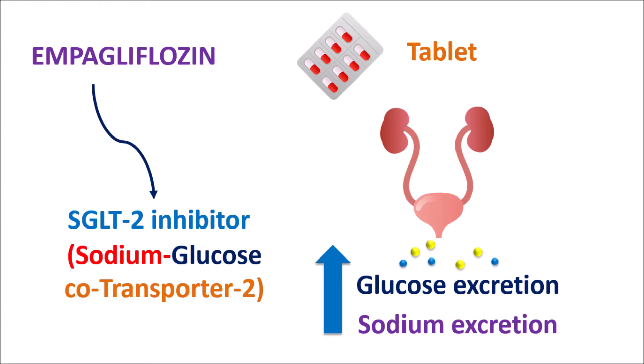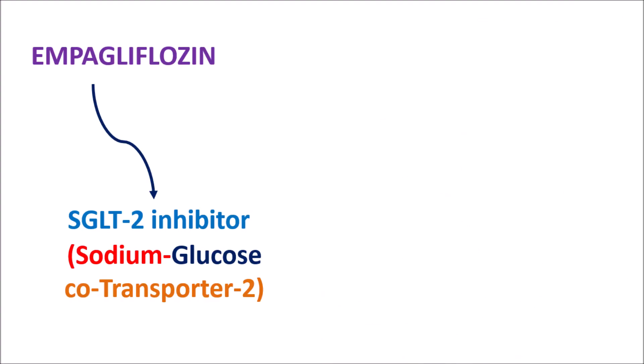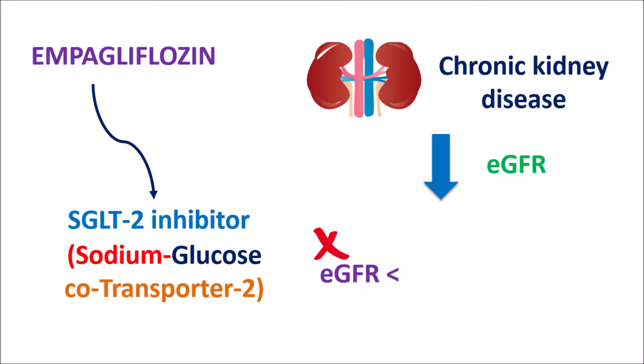This drug can also be used in other conditions like chronic kidney disease (CKD), a condition where the glomerular filtration rate is reduced. In such people we observe a reduced value of eGFR — estimated glomerular filtration rate. Empagliflozin can be given in such people to increase diuresis, but in cases of severe kidney impairment, particularly those with eGFR less than 30 mL per minute per 1.73 square meters, it is not recommended.